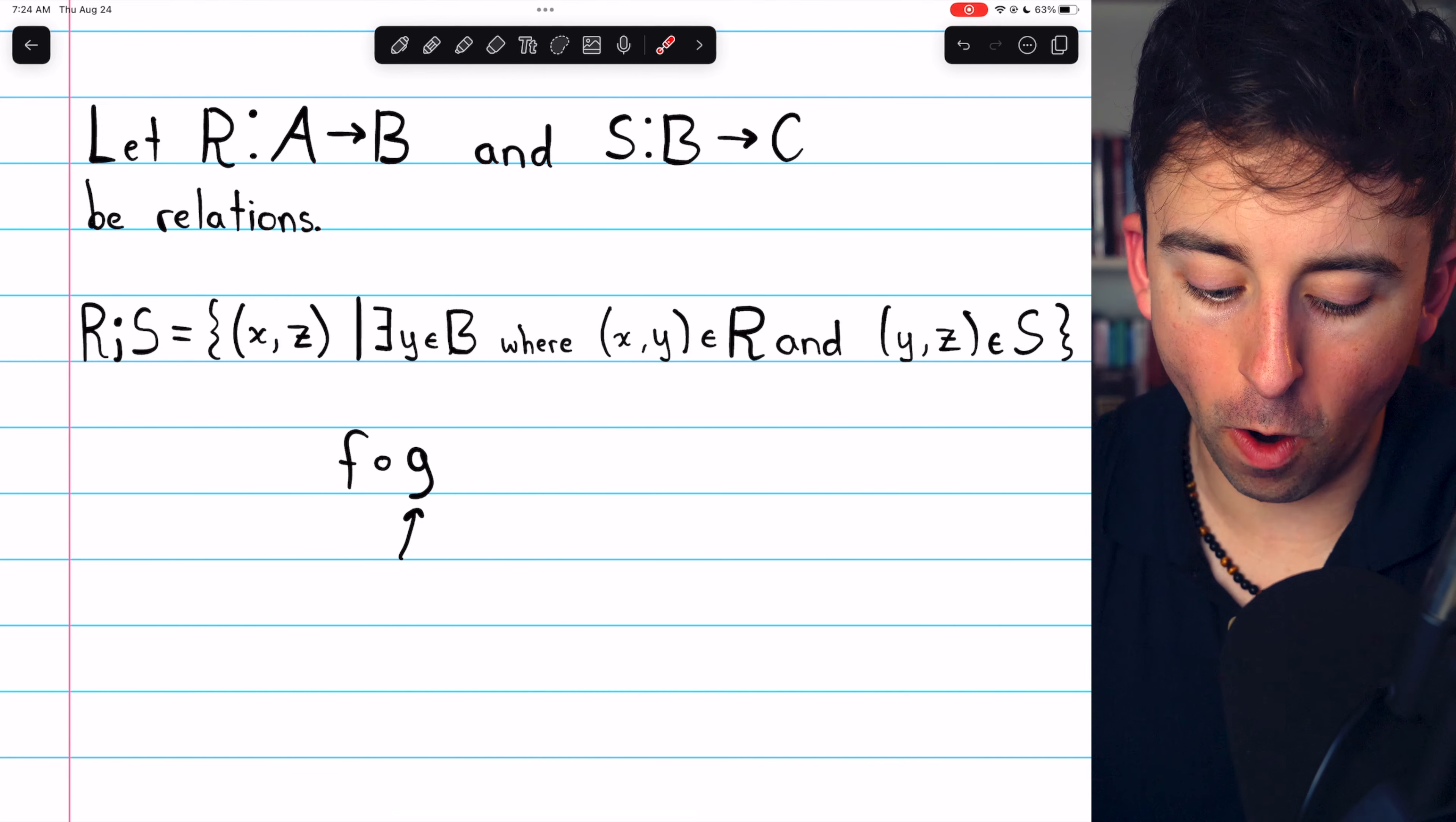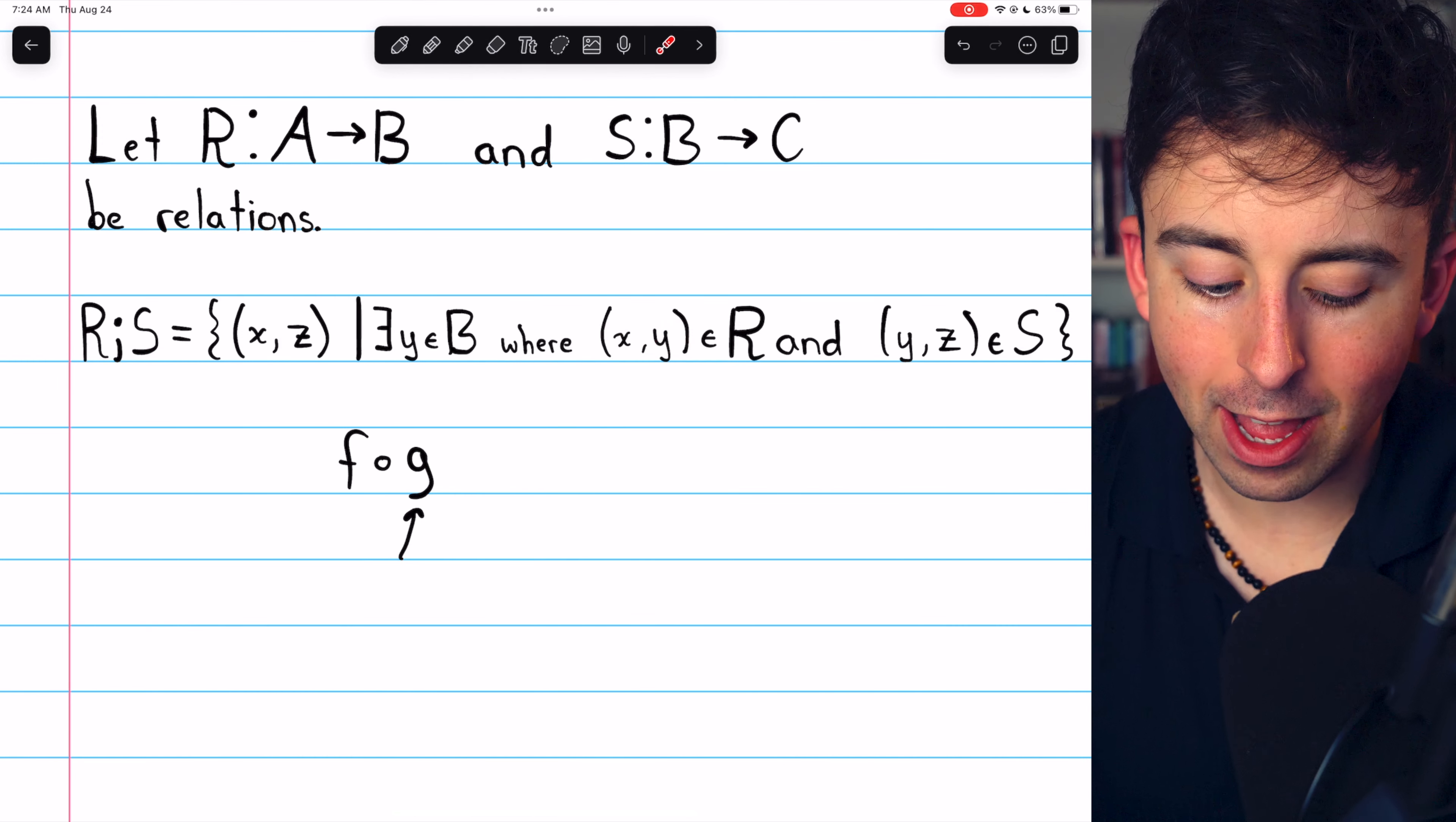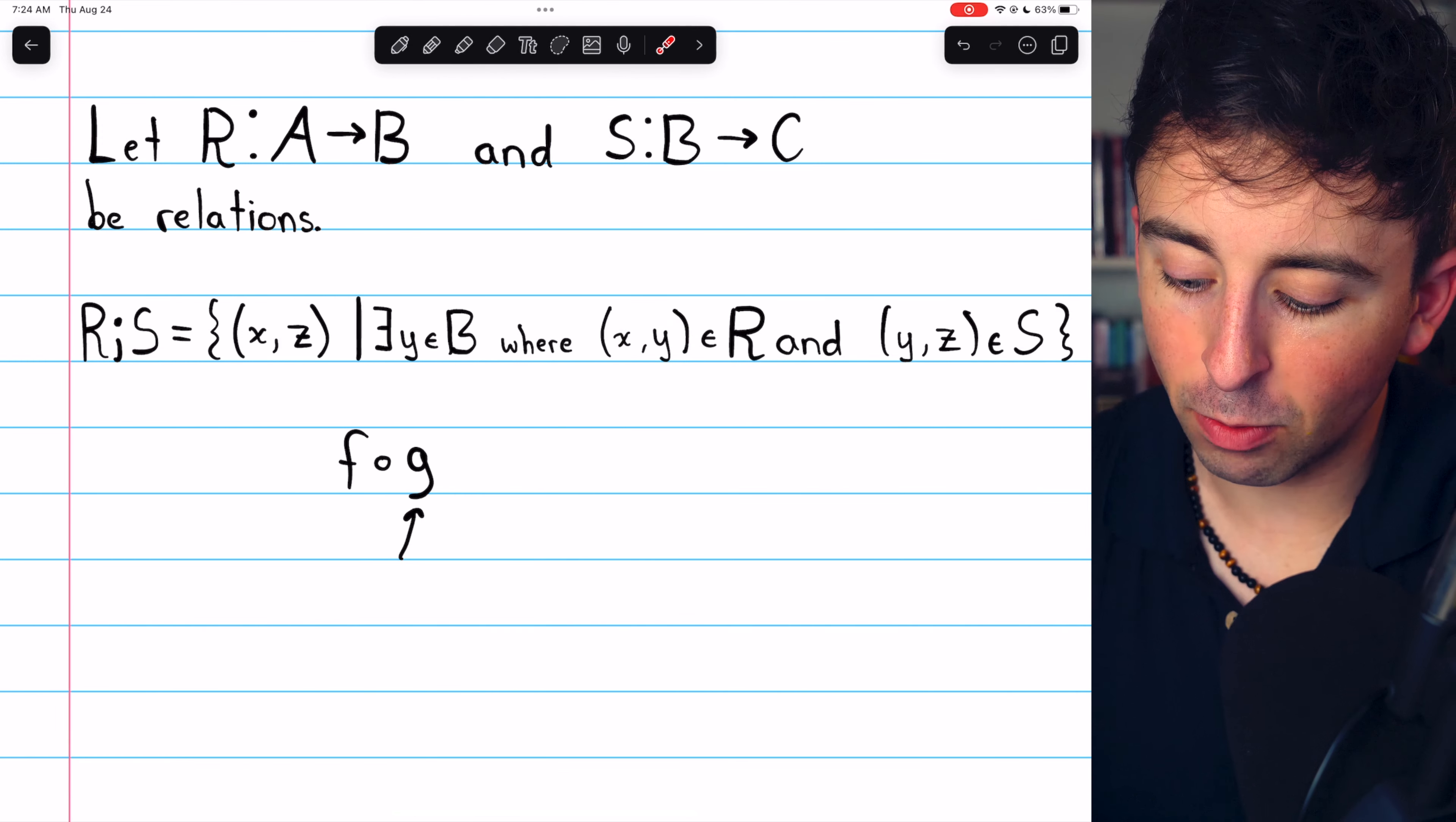I'm going opposite the way that it's done for function composition. I'm going left to right. The relation R relates X to Y, but then S relates Y to Z. And so in total, the composition relates X to Z. This is a left to right direction.